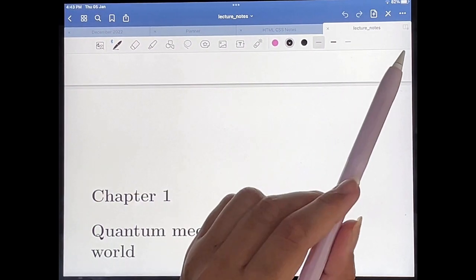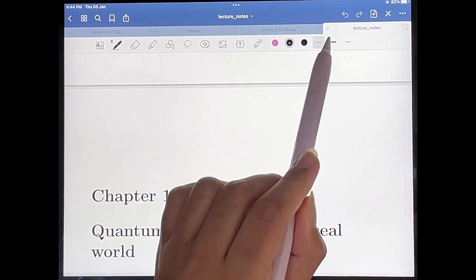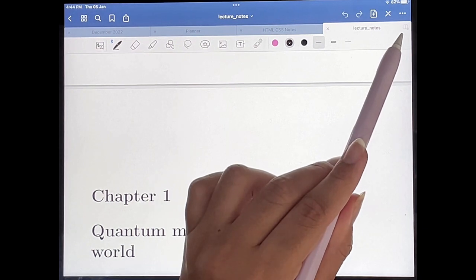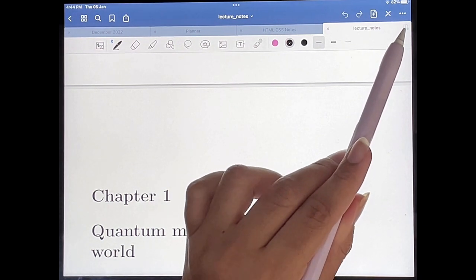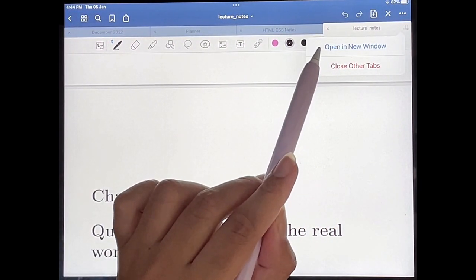what you're going to do is on the current document that's open, on the tab of the current document—mine is over here—you're going to see there's a little icon on the right hand side. You're going to tap on that and you're going to